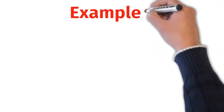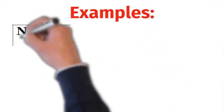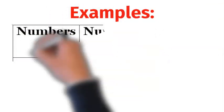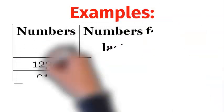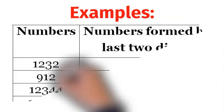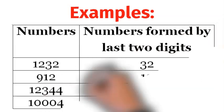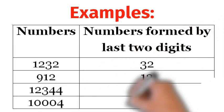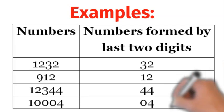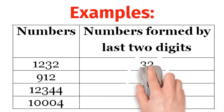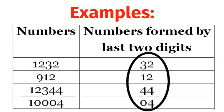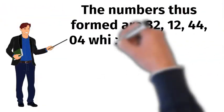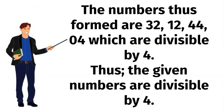For example, let's take some numbers. The numbers thus formed are 32, 12, 44, 4, which are divisible by 4. Thus, the given numbers are divisible by 4.